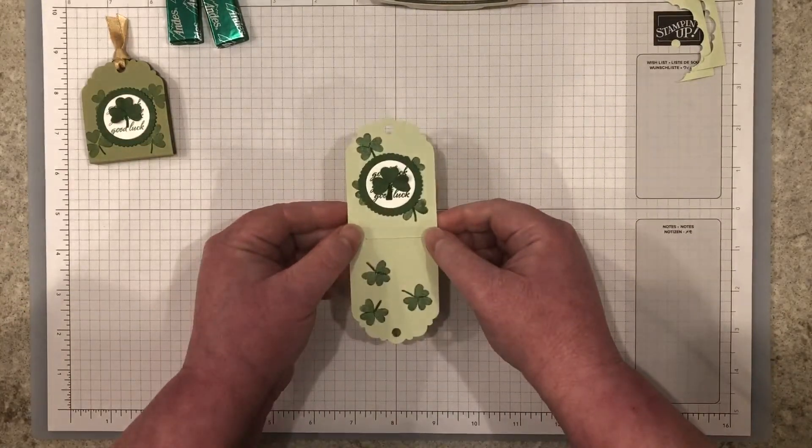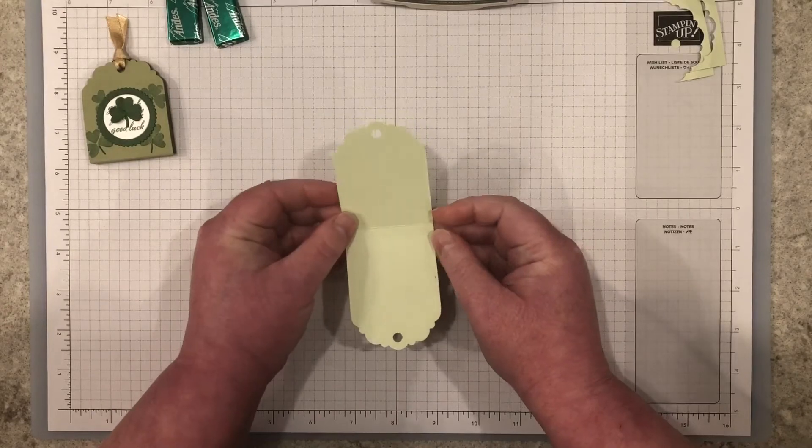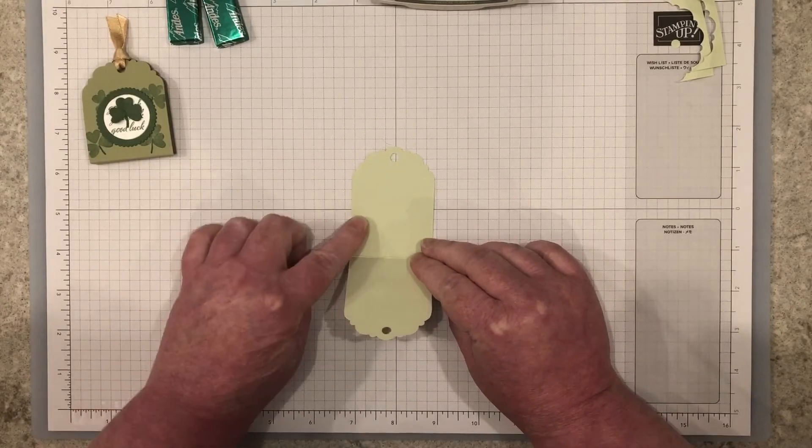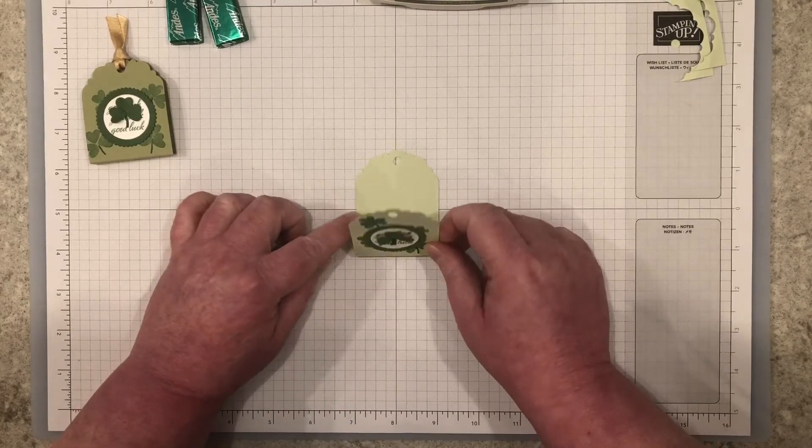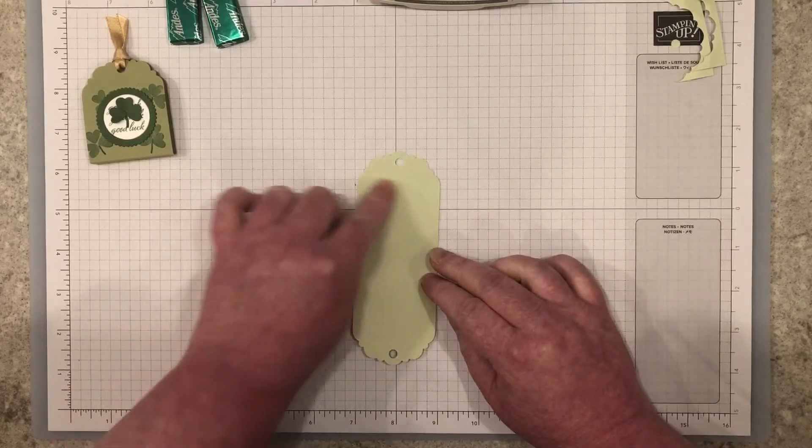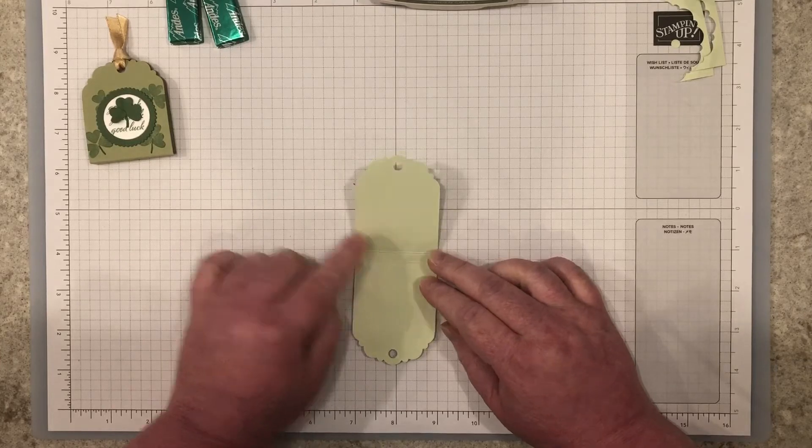Flip your treat holder upside down and backwards so that we're working with the back of the treat holder. When I flip up the front, this will be upright and then when I bring the treat holder down, the treats will be situated right here in the back.